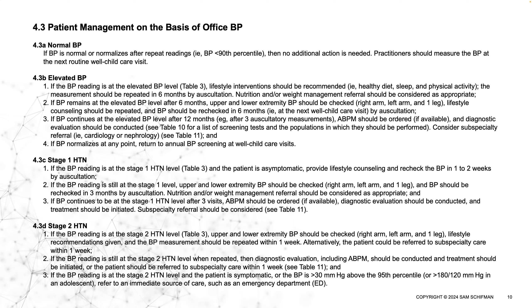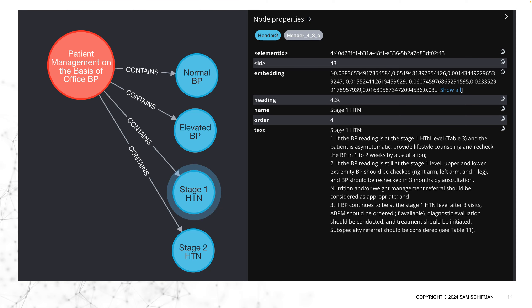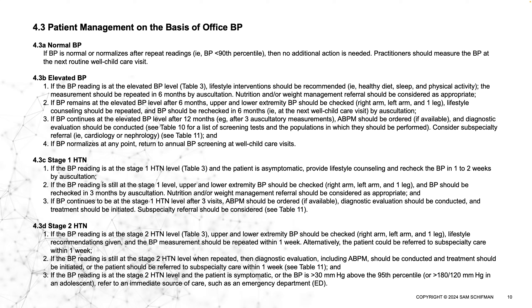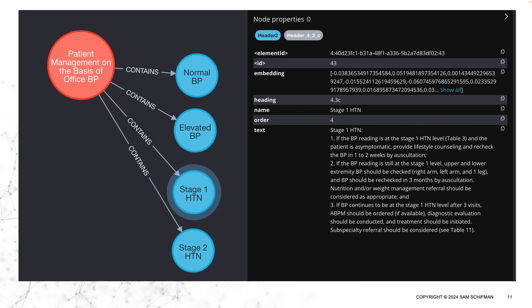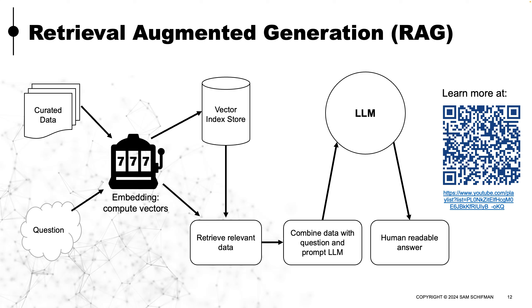If we come back to this, we can look at it. It does have some structure to it, and we can actually pull this into a graph. So here what I've done is I've taken this text and, using the header structure, pulled it into a knowledge graph in Neo4j. And then I've run an embedding on it to give me those vector numbers. Now we can do something called RAG, or Retrieval Augmented Generation.